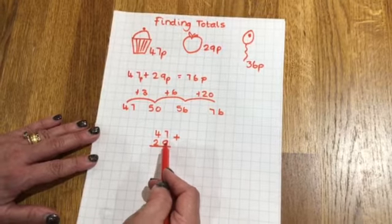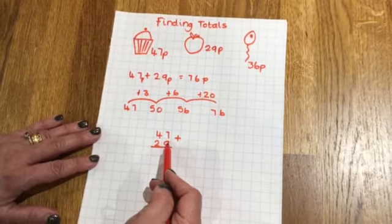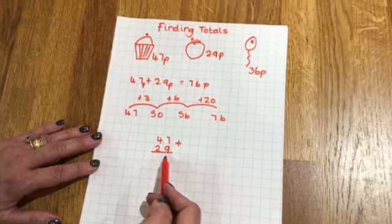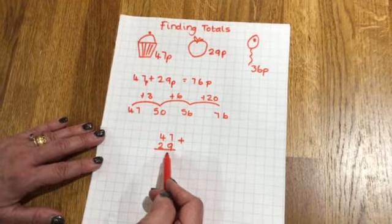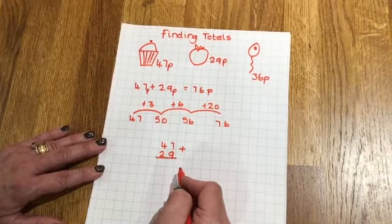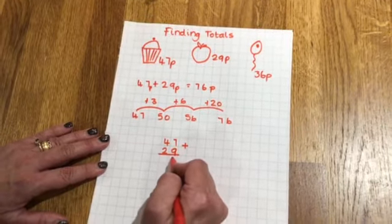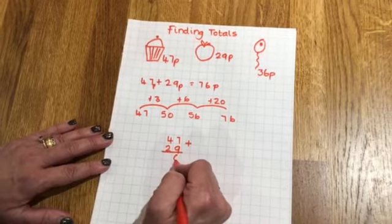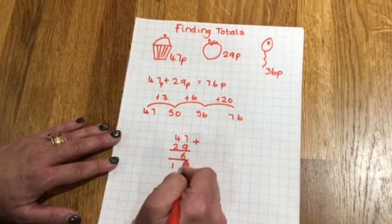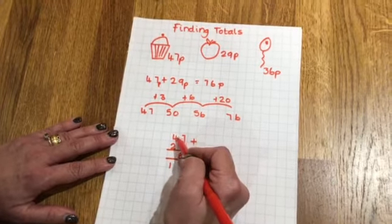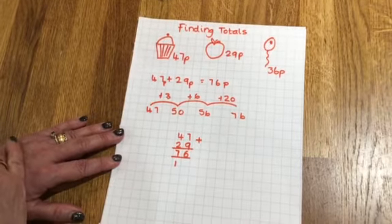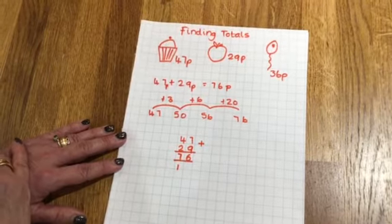7 add 9, that's going to give me 16. Now I can't have 16 in the ones column. So I could do this by exchanging. So that means I put my 6 ones here and I swap the 10 ones for another 10. Let's add up my 10s. 4 tens and 2 tens add 1 ten is 7 tens. That's one way of doing it.